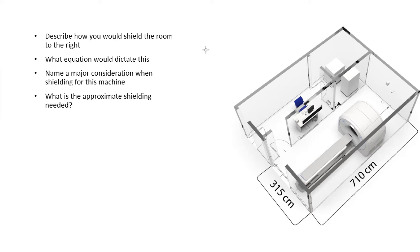The very first thing you would need to do is to ensure that you know that this is a CT unit, and you want to shield this CT room. How you would and the equation are very similar. To begin, you want to find the barrier transmission factor, which we call B.